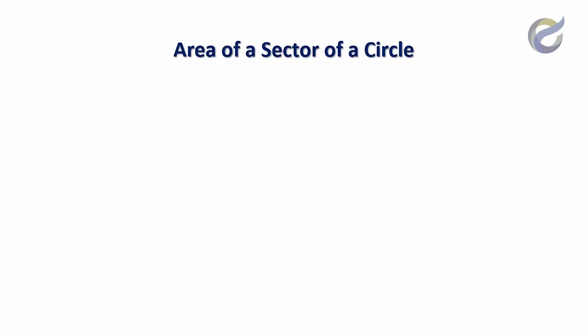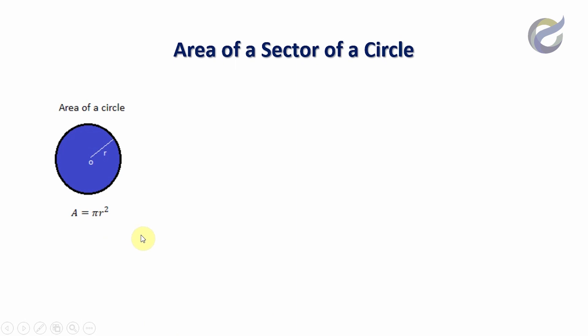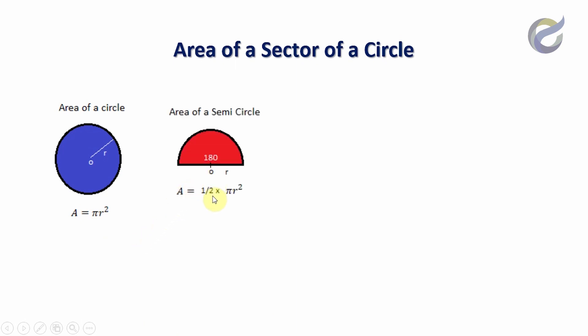In this chapter particularly we are going to discuss about area of a sector of a circle. If you consider a complete circle, the area is given as pi r squared. A semicircle is half of pi r squared, and a quarter circle is one-fourth of pi r squared.